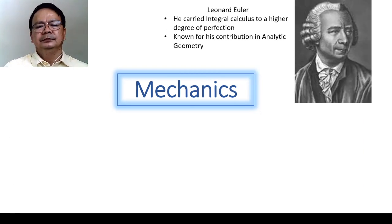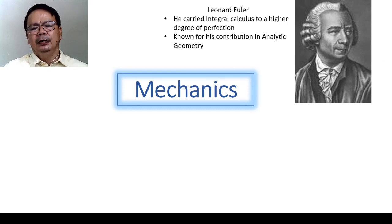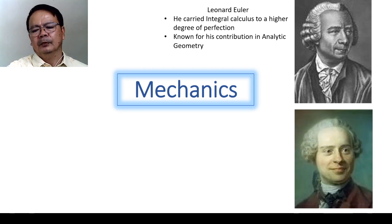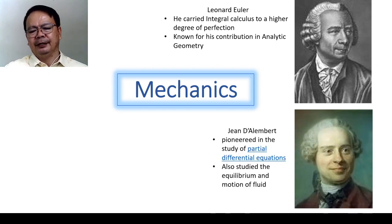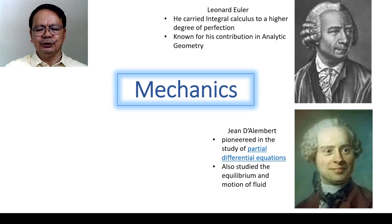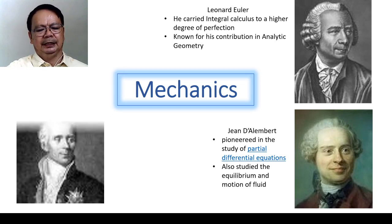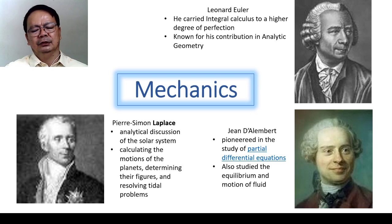We also have Leonard Euler. Leonard Euler carried integral calculus to a higher degree of perfection. He is also known for his contribution in analytic geometry. We also have Jean D'Alembert, who contributed to the study of partial differential equations and also studied the equilibrium and motion of fluids. We also have Pierre Simon Laplace, who contributed much to the analytical discussion of the solar system, particularly on the calculation of the motions of the planets, determining the figures and solving tidal problems.